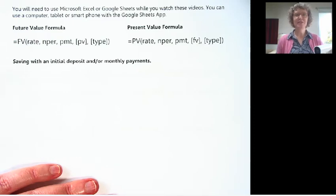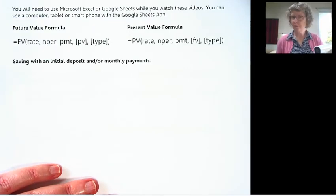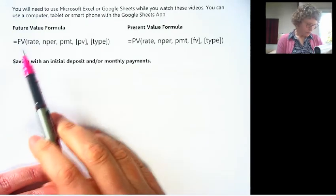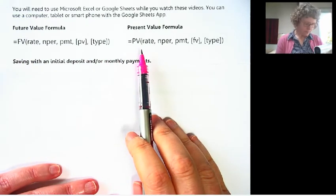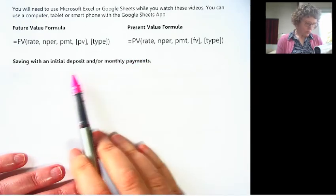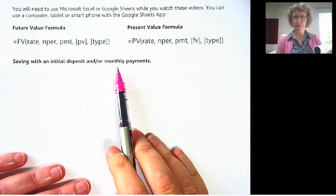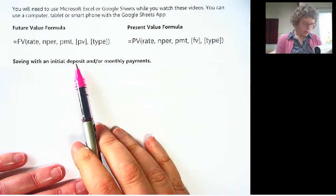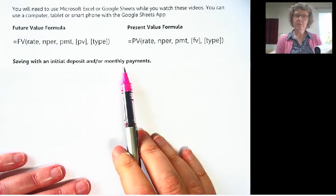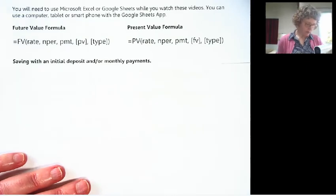In this video we're going to continue with our financial math and using our spreadsheet formulas. We're going to use the same formulas we've been using, the future value formula and the present value formula. The difference is now we can have monthly payments. You might have an initial deposit or not, and you could also have monthly payments or not. Let's see how to put those into the formula.